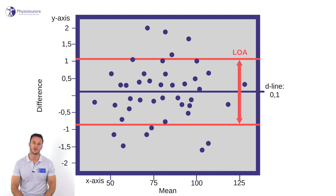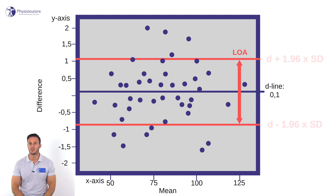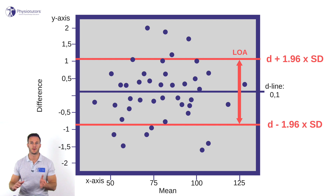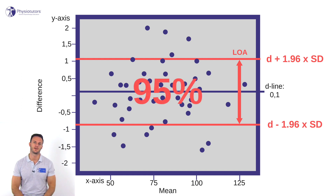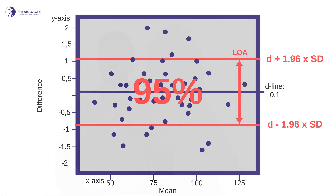The room between the dotted lines is called the limits of agreement. These are interpreted as follows: if a measurement with a certain measurement instrument is conducted twice, the second measurement will be somewhere between D minus 1.96 times the standard deviation and D plus 1.96 times the standard deviation in 95 out of 100 cases, only due to the measurement error. If the value of the second measurement falls outside the limits of agreement, it can be seen as a true change, as it is bigger than the measurement error.